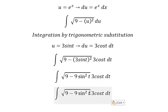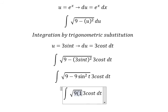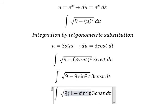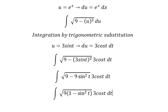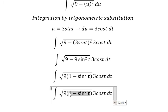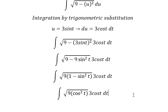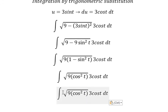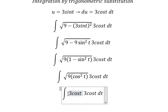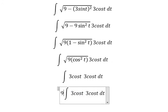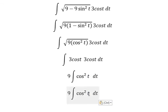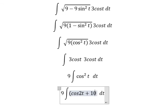Number 9, we can do factorization. 1 minus sine t squared we change to cosine t squared. The square root of this one we have 3 cosine t. Number 3, number 3, number 3 we have number 9. So I will put number 9 in here. Cosine t with cosine t we have cosine t squared. Cosine t squared we change to cos 2t plus 1 over 2.